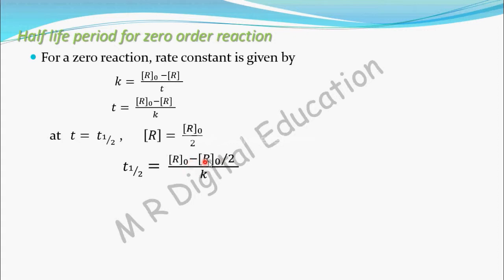r0 minus r0 by 2 is r0 by 2, because 1 minus 1 by 2 is 1 by 2. r0 minus r0 by 2 is r0 by 2 divided by k. So what you get? T half equals r0 by 2k.